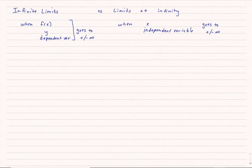Infinite limits are when f of x, the function itself — or we often think of that as y, or the dependent variable — when those go to plus or minus infinity. Limits at infinity, however, are when x, or the independent variable, goes to plus or minus infinity.